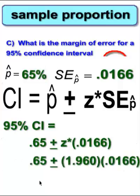1.960 is the z-star because it's a 95% confidence interval. And we finally get the final answer. That is your confidence interval, 95%. That's it.